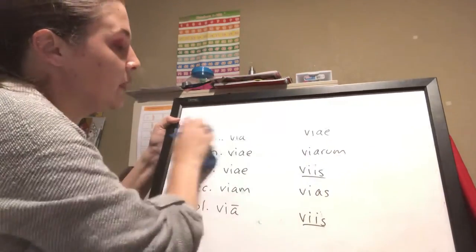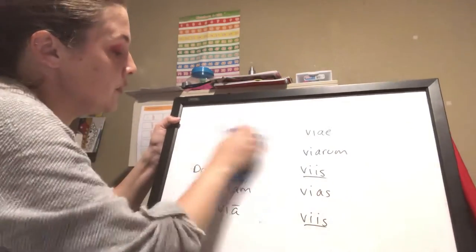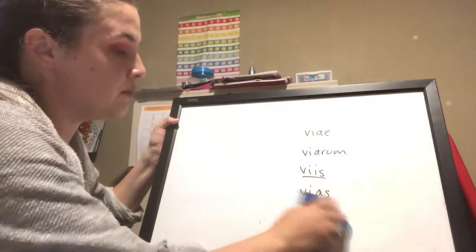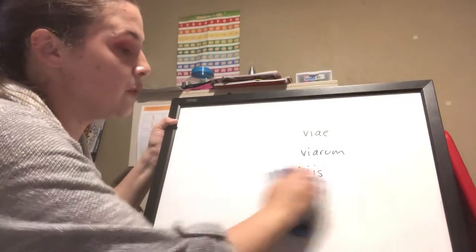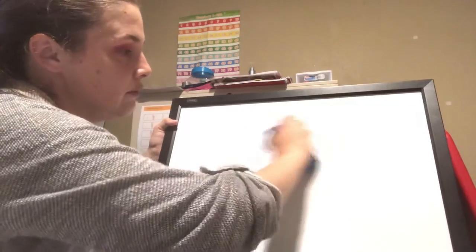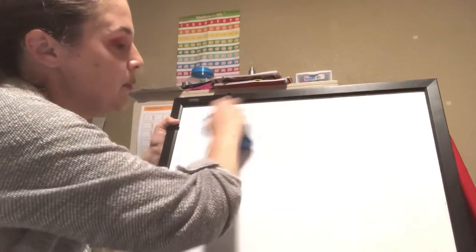We are going to move on to the masculine exceptions in the first declension and then talk about the second declension. In the first declension, we have some masculine words that look like feminines because they're first declension and most words are feminine there — but these are masculines.